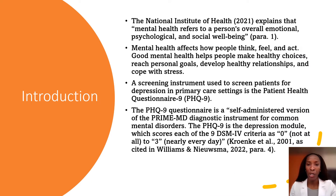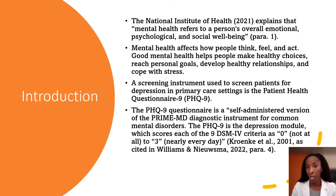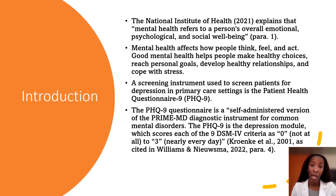The National Institute of Health explains that mental health refers to a person's overall emotional, psychological, and social well-being. Mental health affects how people think, feel, and act. Good mental health helps people to make healthy choices, reach personal goals, develop healthy relationships, and cope with stress.